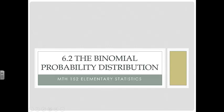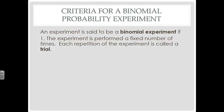6.2 The Binomial Probability Distribution. Let's take a look at some criteria for a binomial probability experiment. In order to be a binomial experiment, it must be performed a fixed number of times, and each repetition is called a trial.